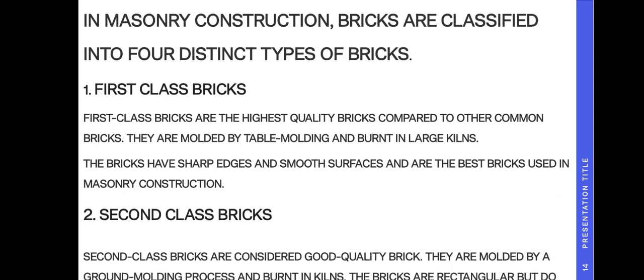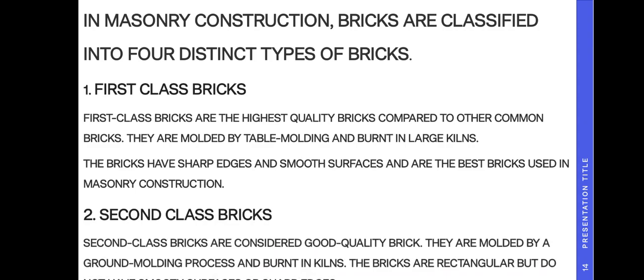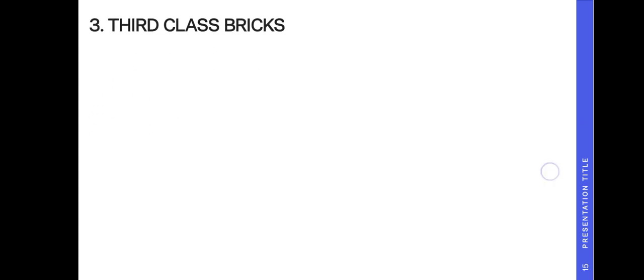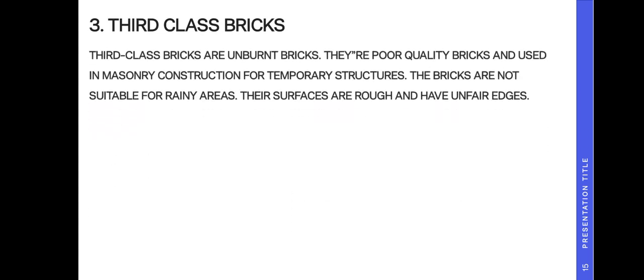Second class bricks are considered good quality bricks. They are molded by the ground molding process and burnt in kilns; the bricks are rectangular. Third class bricks are unburned bricks. They are poor quality bricks used in masonry construction for temporary structures. These bricks are not suitable for rainy areas; their surfaces are rough and have irregular edges.